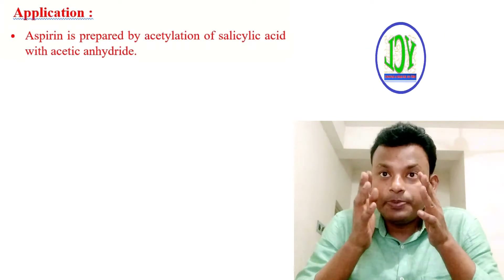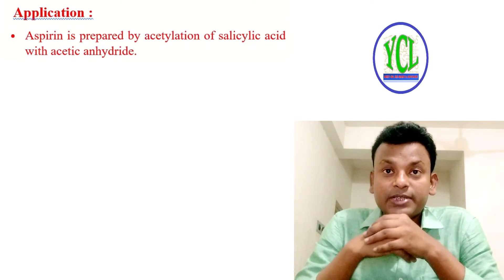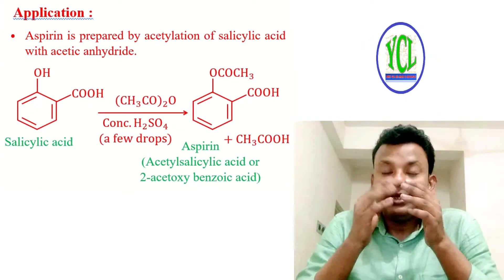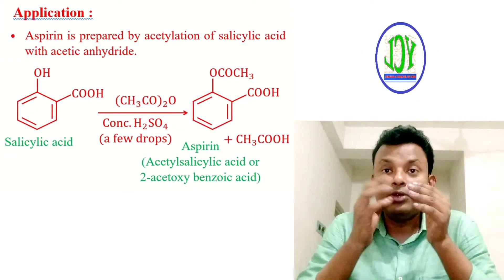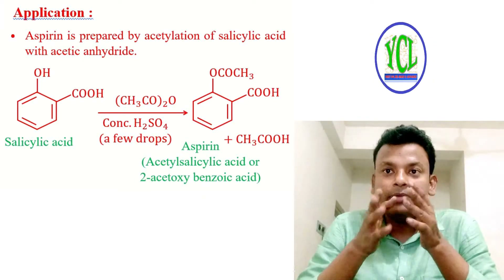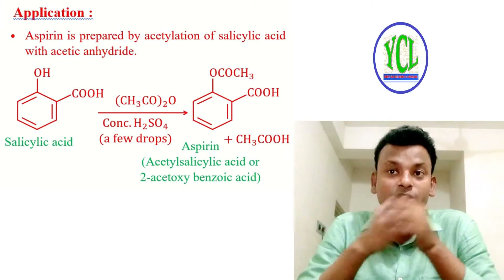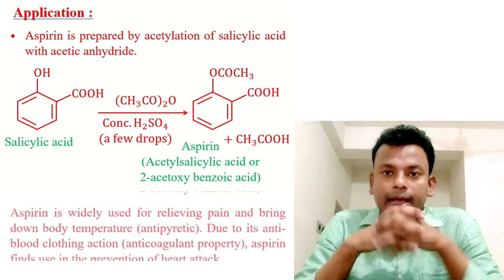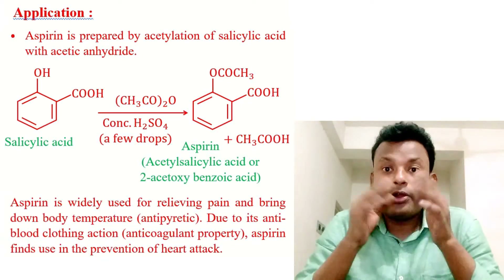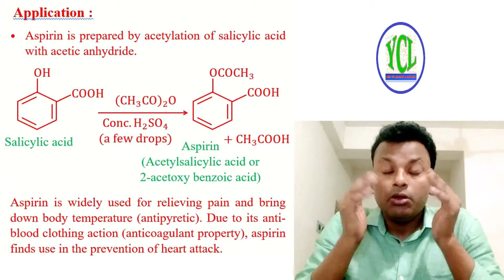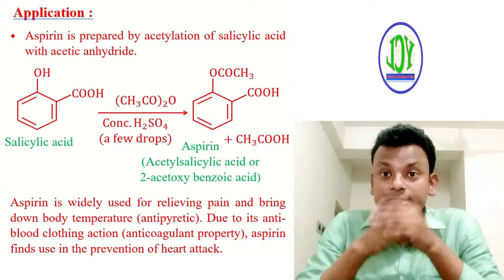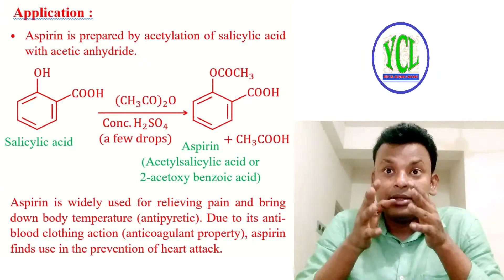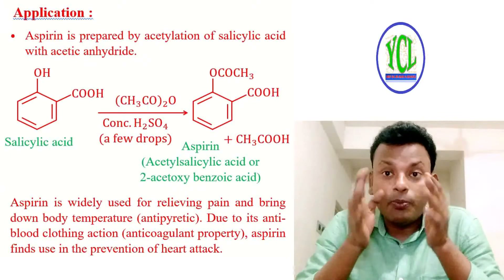Application: aspirin is prepared by acetylation of salicylic acid with acetic anhydride. Salicylic acid reacts with acetic anhydride with a few drops of concentrated H2SO4 to give aspirin — that is 2-acetoxybenzoic acid — and acetic acid is also formed. Aspirin is widely used for relieving pain and bringing down body temperature as an antipyretic, due to its anti-coagulating property.